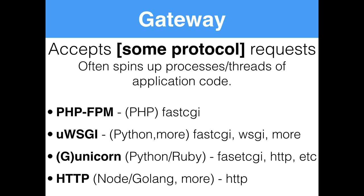There are different gateways for different languages. UWSGI is another example — a common one for Python, but it can also be used for PHP and Ruby. It can speak FastCGI or WSGI, which is its own protocol. It's the same setup: Nginx can speak WSGI or FastCGI and pass the request off to UWSGI, which in turn spins up instances of a Python, Ruby, or PHP application. For Python and Ruby, we also have Unicorn and G-Unicorn. They can speak FastCGI or even HTTP, so you can have Nginx proxy an HTTP request directly to Unicorn. These all do the same thing — convert the request in a way that code can read, and then your application code runs and responds.